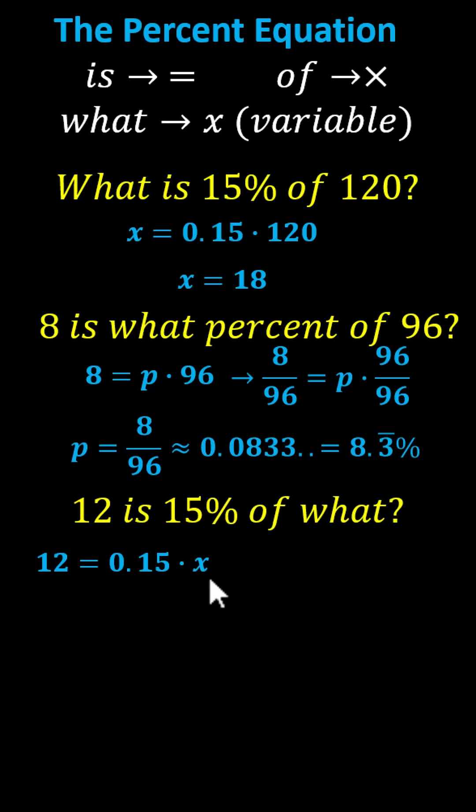To solve for x, we divide both sides by 0.15. Simplifying, we have x equals 12 divided by 0.15, which equals 80. So, 12 is 15% of 80. I hope you found this helpful.